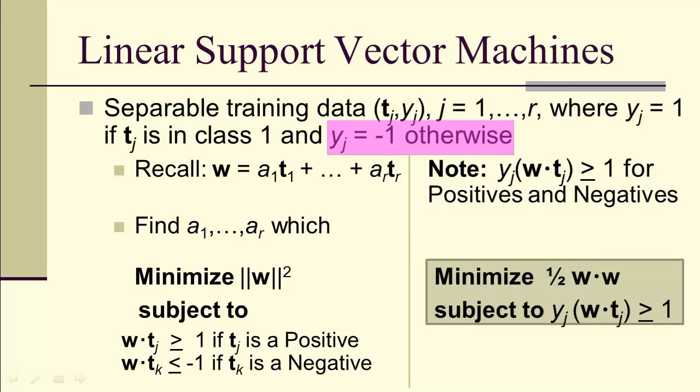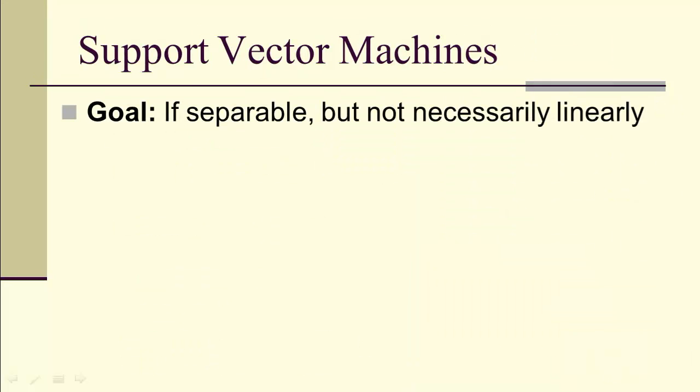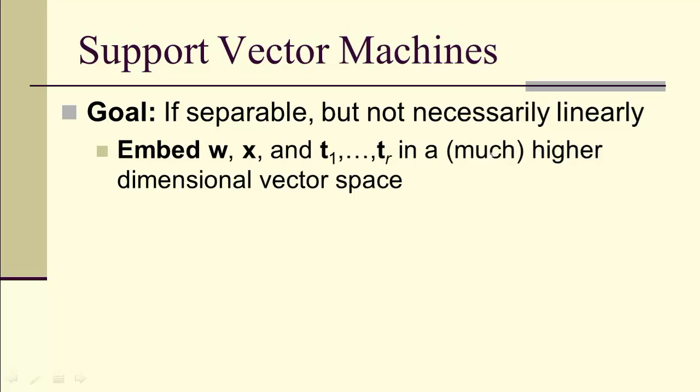Subject to this boundary condition, or this constraint, for all the different features. Let's just remind ourselves of our notation. A support vector machine, the goal is if it's separable, but not linearly separable, maybe we can project upwards into a much higher dimensional vector space.